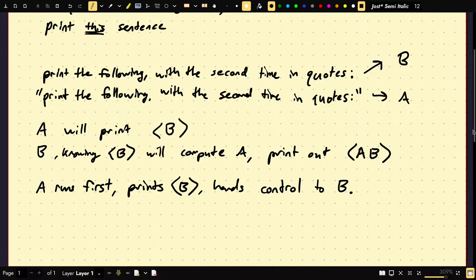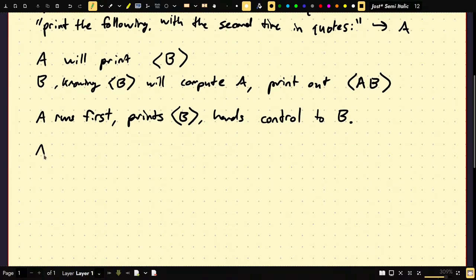First, prints B. Hands control to B, which, and I said it'll compute A and it'll print out B. So now let's go through the argument. A is the Turing machine with no input. So A takes no input, it prints out the encoding of a machine B and it passes control to B. This is not a complete definition because A does not know B yet. We haven't talked about what B does. So we cannot really finish the definition of A until we just talk about B.